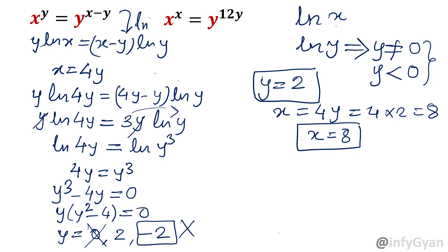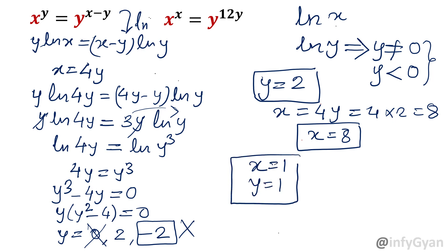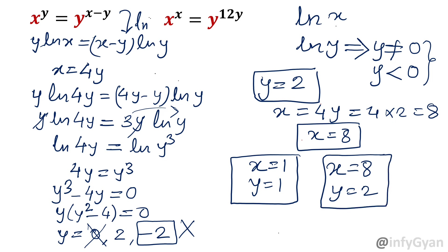So the final solutions are: first solution x = 1 and y = 1, and second solution x = 8 and y = 2. These are all solutions to the system. Thank you so much for watching. Please do subscribe to my channel if you liked this video.